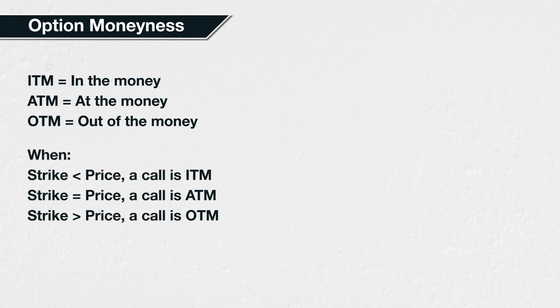For call options, when the strike price is less than the current asset price, the option is in the money. When the strike price equals the current asset price, the option is at the money. And when the strike price is greater than the current asset price, the option is out of the money.